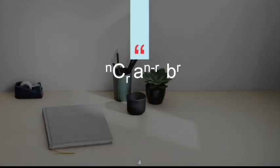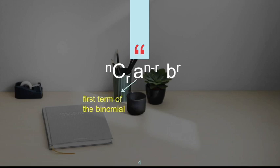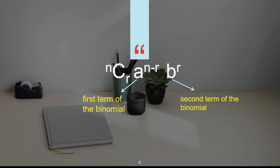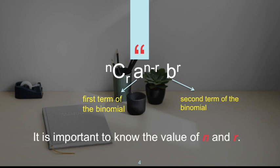Now this formula is going to be very helpful: combination of n taken r, multiplied by a to the power of n minus r, and b to the power of r. This gives a term in the binomial expansion. Here, a is the first term of the binomial and b is the second term. The combination of n taken r is our coefficient — the same as the coefficient in Pascal's triangle. It is very important to know the values of n and r.